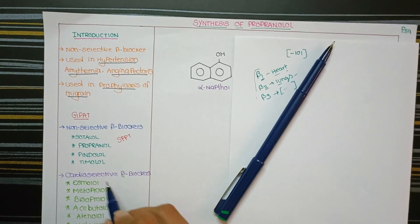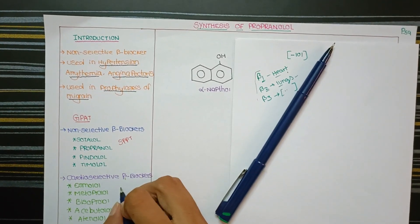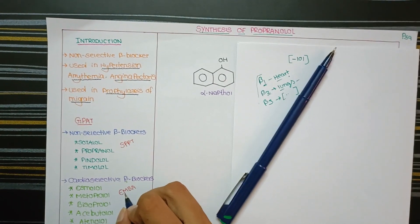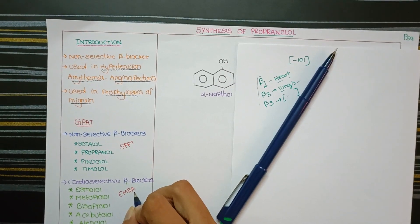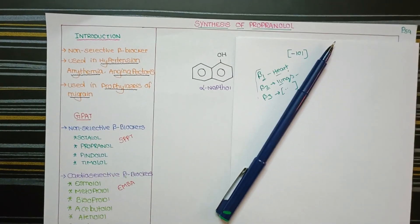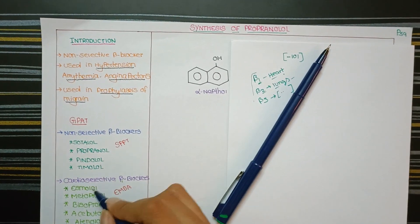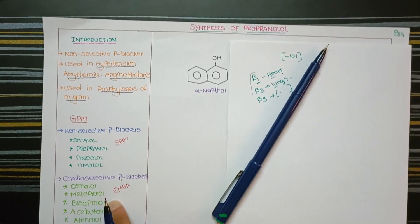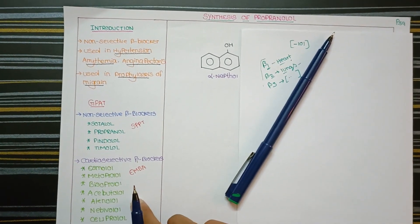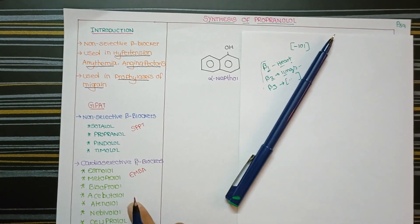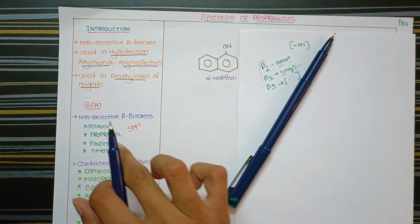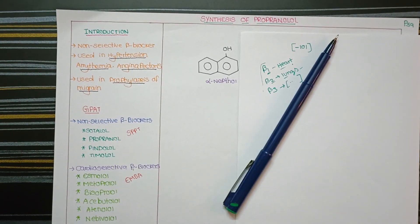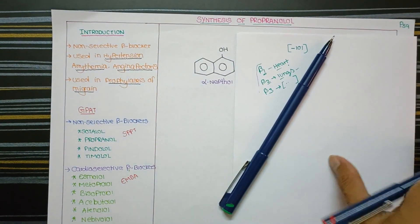Cardioselective beta blockers include esmolol, metoprolol, bisoprolol, betaxolol, atenolol, acebutolol, nebivolol, and celiprolol. These drugs selectively block only beta-1 receptors, so they are used in cardiovascular complications. Non-selective drugs like sotalol, propranolol, pindolol, and timolol are used for hypertension, arrhythmia, angina, and primary and secondary hypertension.